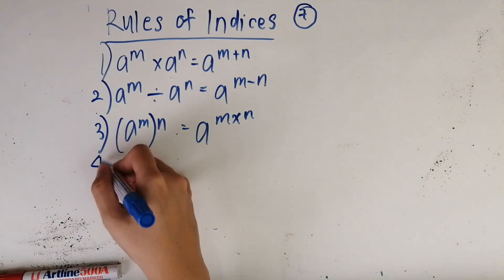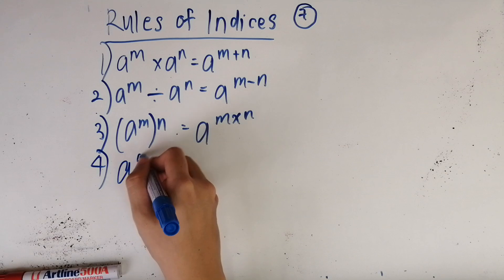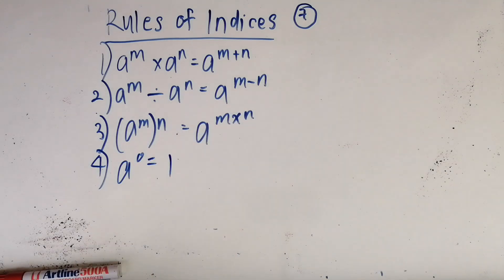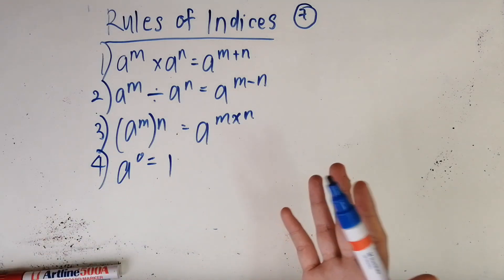The fourth one is that a^0 equals one. So this means that whatever to the power of zero is one. Like 100 to the power of zero is one, 3 to the power of zero is one. You can type it into your calculator to make sure that it's true.